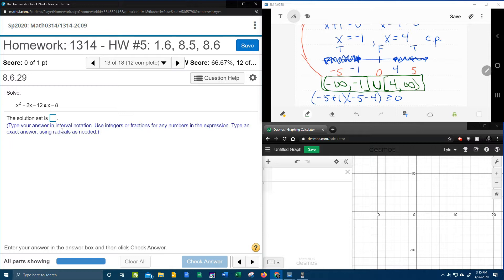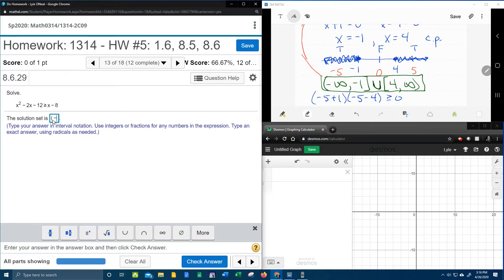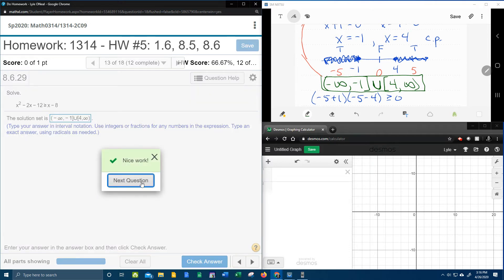Luckily, MyLabMath over here, it does say to write your answer in interval notation. And so we're going to have everything from negative infinity to negative 1. We need a bracket. And the bracket comes from the keyboard, just so you know. Union bracket 4 to infinity. Alright. Fingers crossed. Alright. There you go.